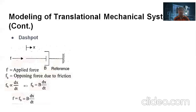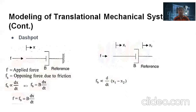In this example, one end of the dashpot is fixed. But sometimes both ends may be free. In such case, the force acting on the dashpot is directly proportional to the differential velocity. Therefore, Fb = B · d/dt(x1 − x2). By the net force balance equation, F = Fb = B · d/dt(x1 − x2).